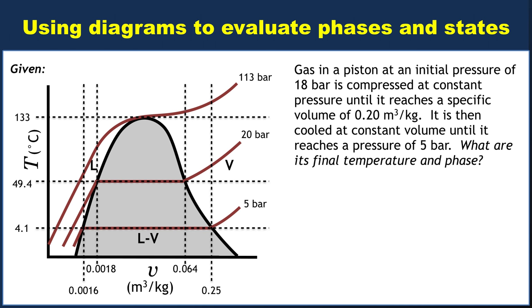Our first step should be to label the initial state. So it's gas, first of all, that immediately tells us that it's to the right of the vapor dome on a TV plot. It's at an initial pressure of 18 bar. While we have a 20 bar line and a 5 bar line, we don't have an 18 bar line. But you'll also notice that all isobars sort of behave the same way if they're passing through the vapor dome.